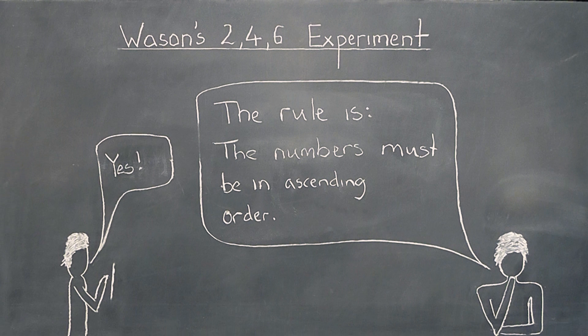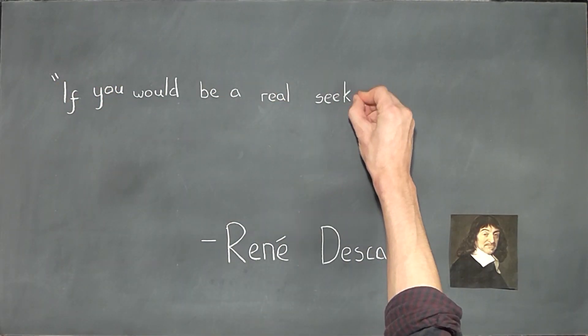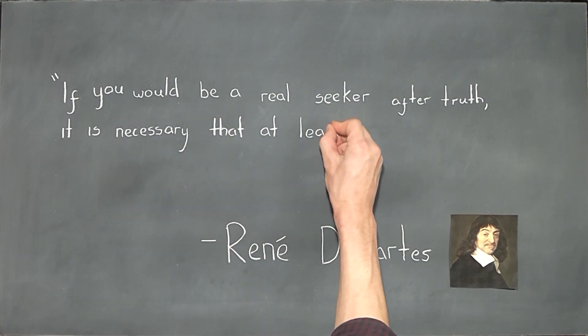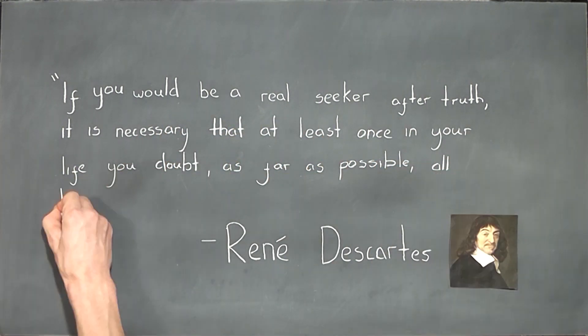It really is difficult to exaggerate the difference between these two approaches. Arguably the most fundamental value at the core of modern science is the unrelenting attempt to disprove one's existing beliefs and opinions. To quote René Descartes, if you would be a real seeker after truth, it is necessary that at least once in your life, you doubt, as far as possible, all things.